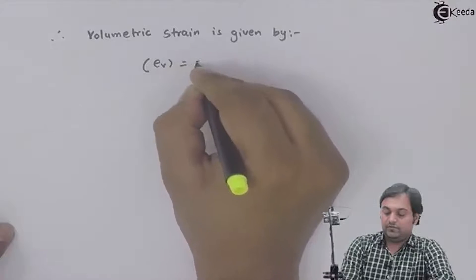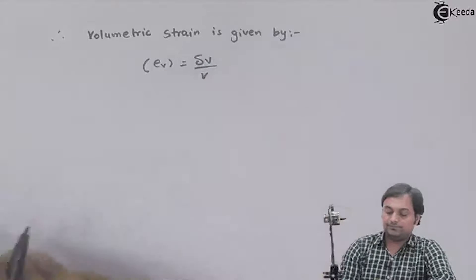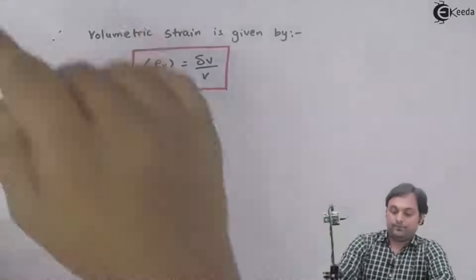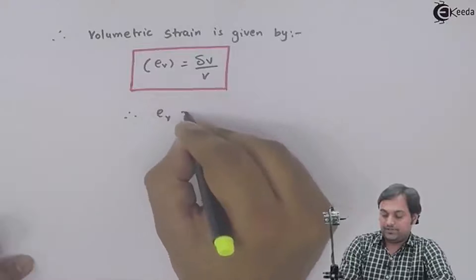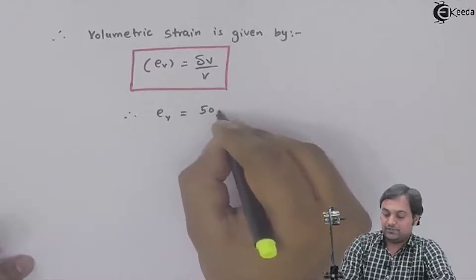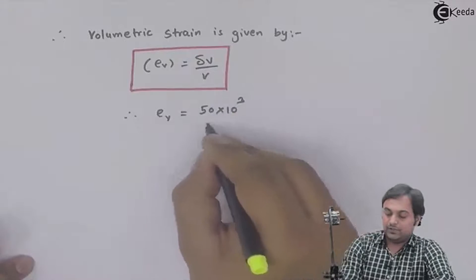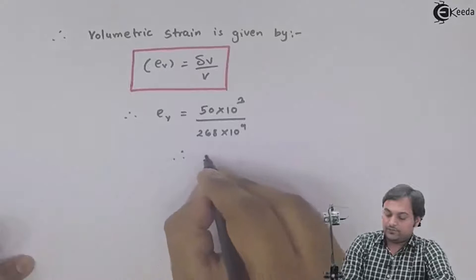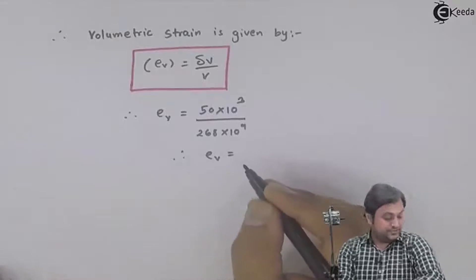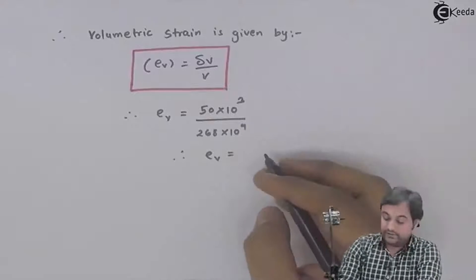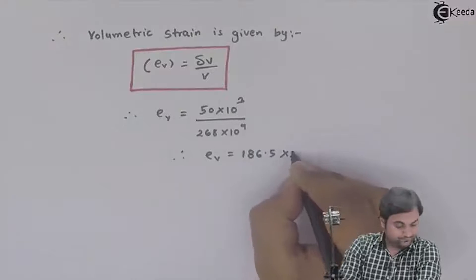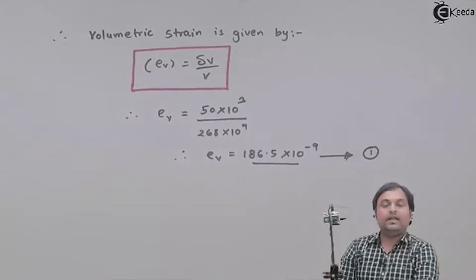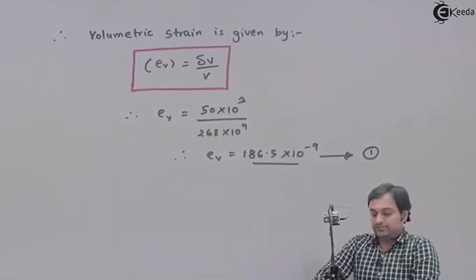Now, the volumetric strain is given by e_V = ΔV / V. Therefore, volumetric strain = (50×10³) / (268×10⁹), which gives 186.5×10⁻⁹. This will be equation number 1.